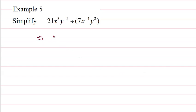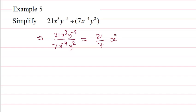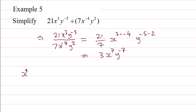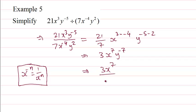Example five: first we write 21x cubed y to the power 5 on the top, and 7x to the power minus 4, y to the power 2 on the bottom. 21 divided by 7, then x to the power 3 subtract negative 4, which is 3 minus minus 4. Then y to the power 5 subtract 2. So we get 3, x to the power 7, and y to the power minus 7. Using the negative exponent rule, x to the power minus n equals 1 over x to the power n, we write this as 3x to the power 7 on the top and y to the power 7 on the bottom.